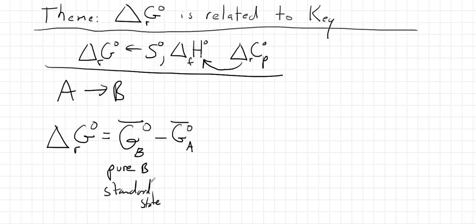Well, the standard means that we've got pure B and it's in its standard state. So the standard state is pure and basically that means that we're working at one bar. And we have the same thing right here, we have pure A, and we're at one bar.